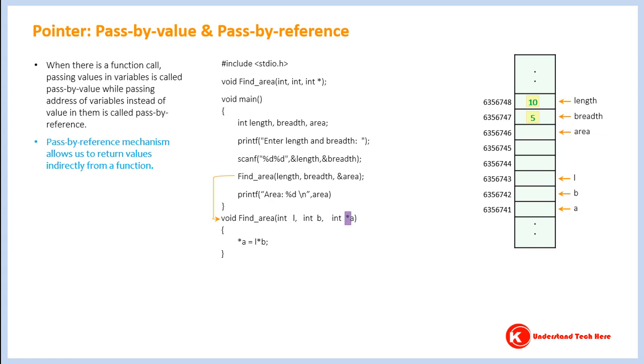Here, three things are passed: value in variable length, which is 10, value in variable breadth, which is 5, and address of variable area, which if you look at the diagram is 6356746. So these three things are passed. See this operator? It is an address operator. Because of this, not the value in variable area, but the address of variable area will be passed. In the case of variables length and breadth, values in them are passed. So this mechanism of passing values in variables is called pass by value. In case of area, not value but address of variable area is passed. So this mechanism of passing address of a variable is called pass by reference.